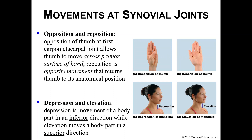Depression and elevation: depression is moving in an inferior direction; elevation is moving in a superior direction. You can depress your jaw by opening your mouth — your jaw goes down. When you close your mouth, you're elevating your mandible, raising it back up. You can also do this with your shoulders: shrugging your shoulders up is elevation, and your shoulders moving back down is depression.